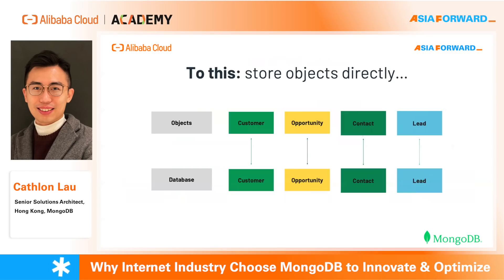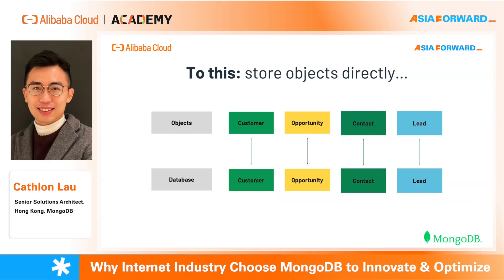But with MongoDB, you can just directly store your object to MongoDB. You can see it is a one-to-one mapping — very easy to use and matching your developer thinking. Just map your business object directly to the database without an ORM layer.